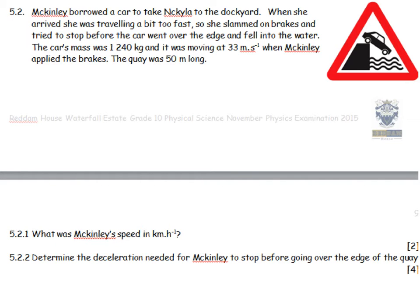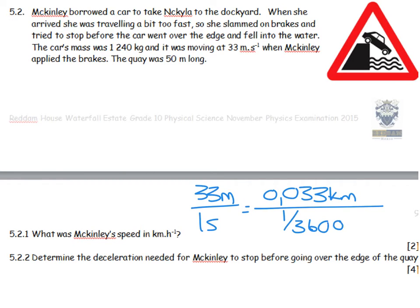What is the speed in kilometres per hour? 33 metres per one second is equal to 0.033 kilometres per 1,360th of an hour. So I multiply 0.033 by 3,600, and I get 118.8 kilometres per hour.